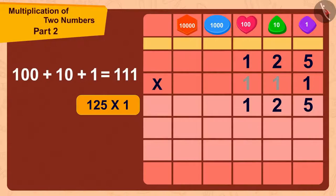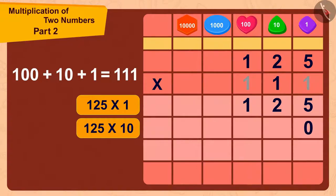Now, we will multiply 125 with 10. We will do it easily in this way. First, we will write 0 here. Then, we just have to multiply 125 with 1.